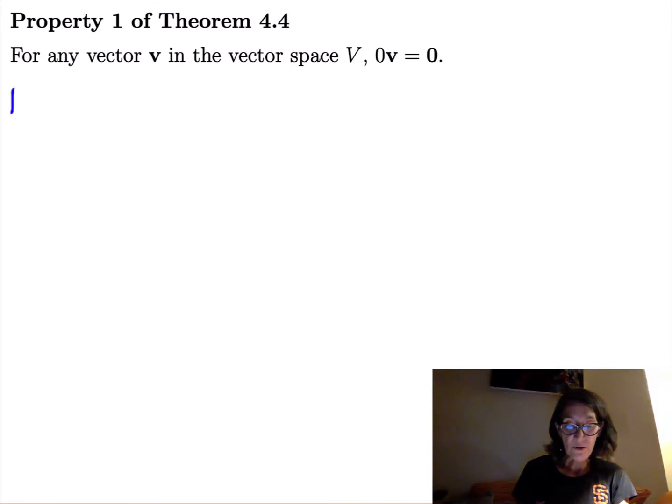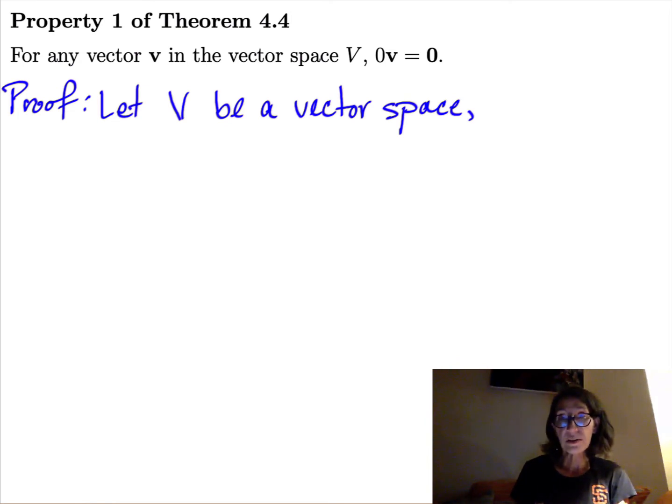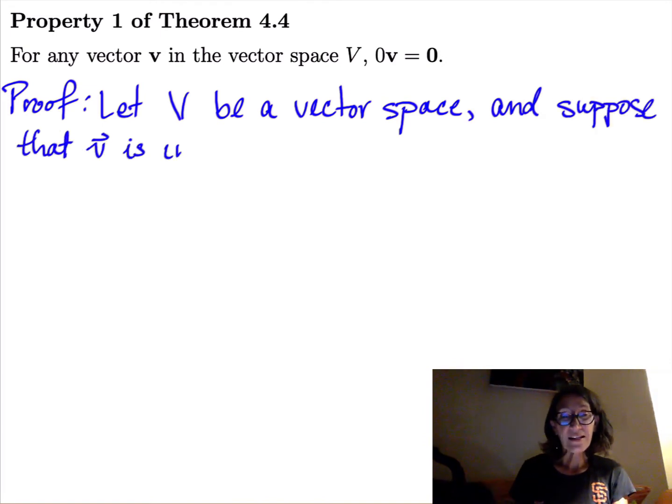All right, so let's start our proof with our assumptions. Let's let capital V be a vector space, so we know we can assume it satisfies all 10 vector space axioms. And suppose that v with a hat on it is a vector in V. I can't write in boldface, so I have to put a hat on anything that's a vector.